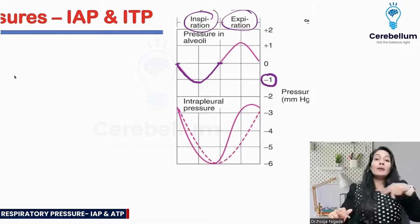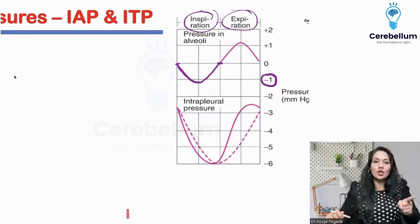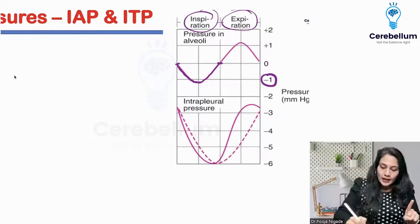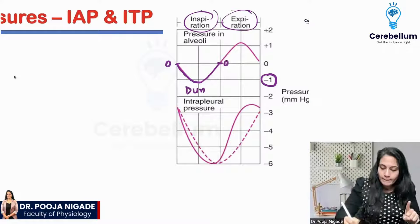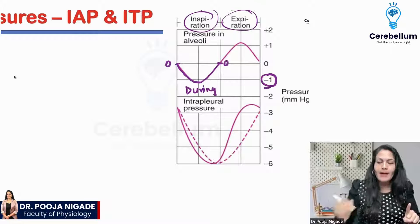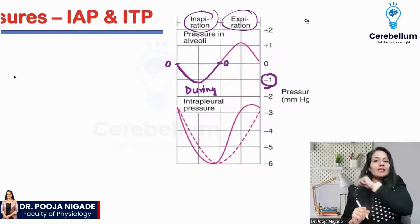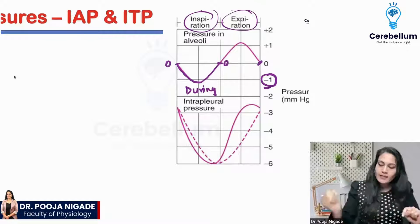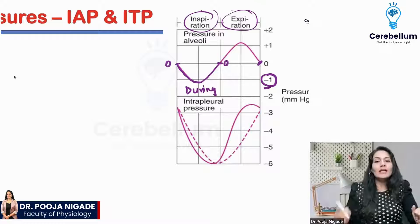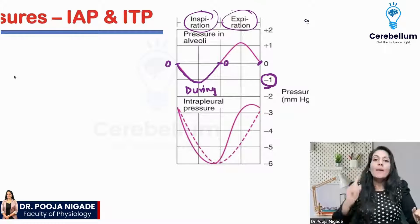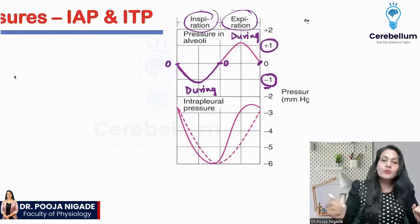At the beginning or end of inspiration, your answer should be 0. Only during inspiration is the answer minus 1. Similarly, at the beginning or end of expiration, the pressure inside the alveoli is again 0. But if asked during expiration, the value is going to be positive.